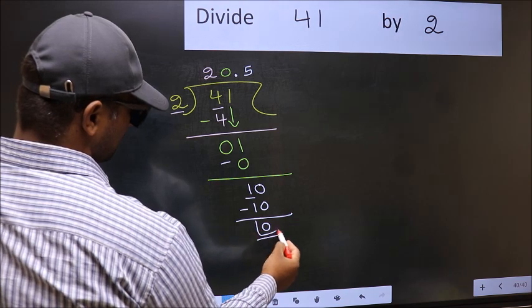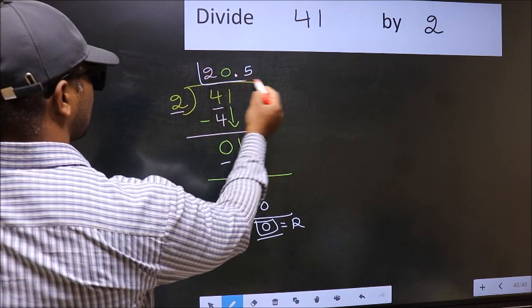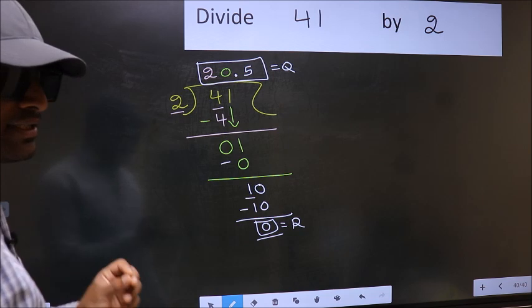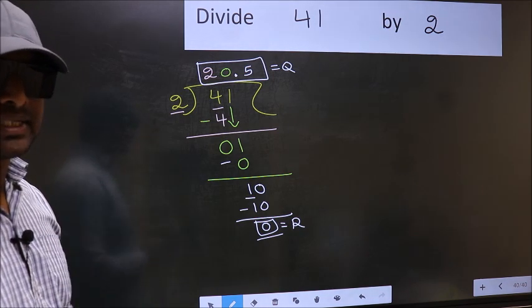So this is our remainder. And this is our quotient. Did you understand where the mistake happens? You should not do that mistake.